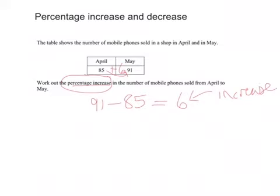But I want my percentage increase. I need to make this into a percentage. Well, it hasn't told me what it's out of yet. It's 6 out of, and it's always out of the original amount. Well, April comes before May, so it's out of 85.